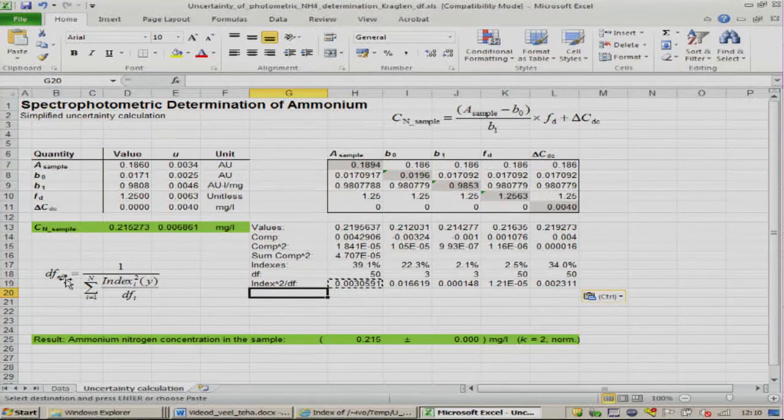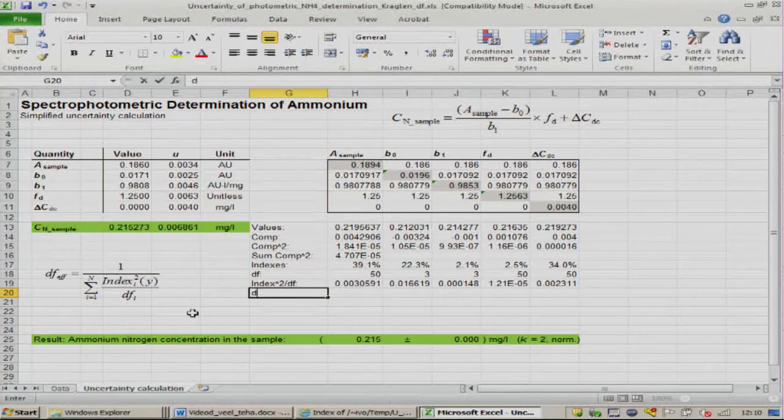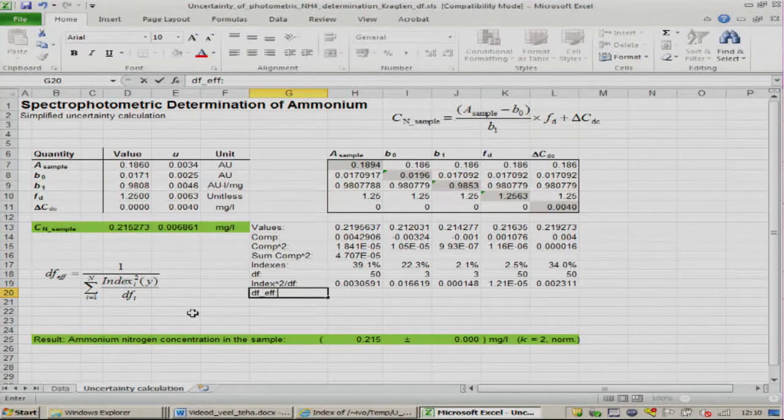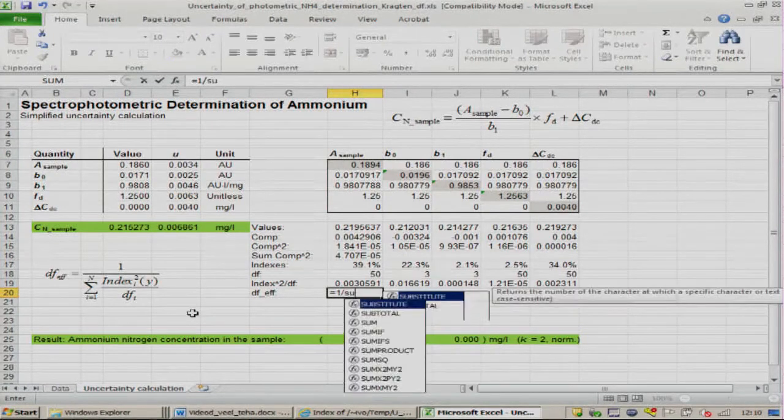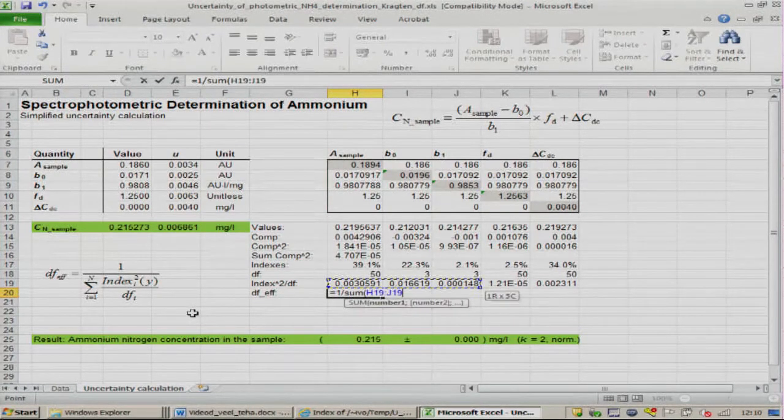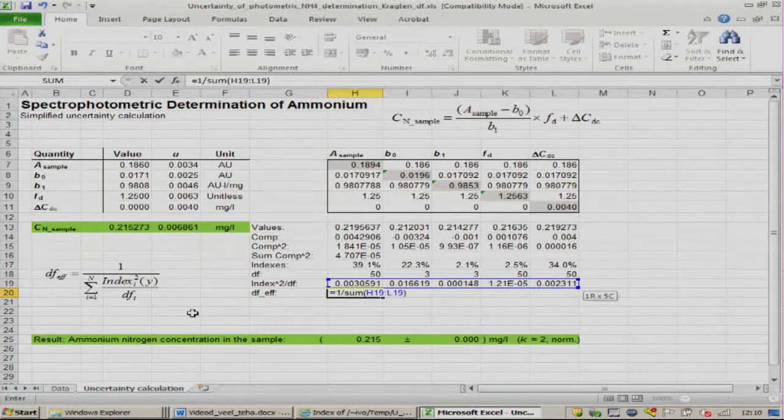And now, the effective number of degrees of freedom for our output quantity we can calculate in this cell. It is 1 divided by the sum of all these ratios.